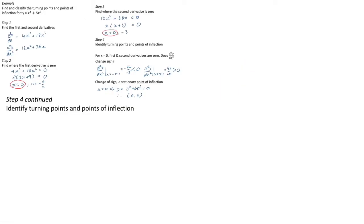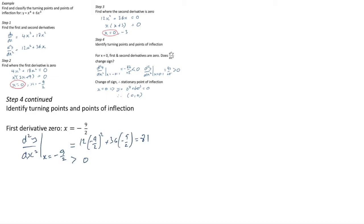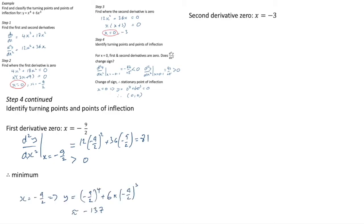Continuing step 4: the first derivative was zero at x = −9/2. The value of the second derivative there is 12×(−9/2)² + 36×(−9/2) = 81, which is greater than 0. That tells us we have a minimum. Substituting back into the original function gives approximately −137, so we have a minimum at (−9/2, −137).